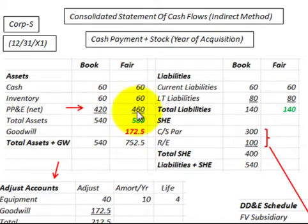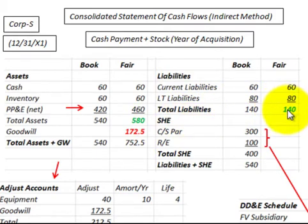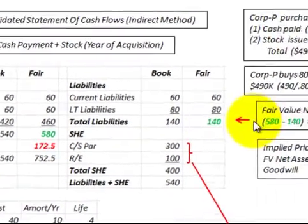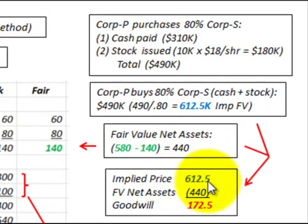The equipment has been assessed up by $40,000 to its fair value at $460,000. Total assets at fair value add up to $580,000. Plus, in this transaction, we also have goodwill of $172,500. The liabilities' fair value is $140,000. So net assets are $580,000 less $140,000, giving us $440,000. The implied price of $612,500 less net assets of $440,000 gives us goodwill of $172,500.